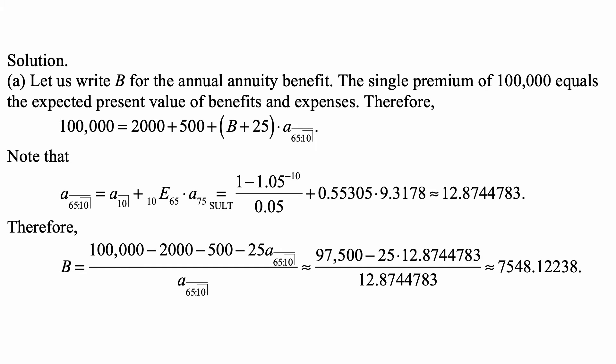And here's the solution. For part A, let us write B for the annual annuity benefit. The single premium of 100,000 equals the expected present value of benefits and expenses.